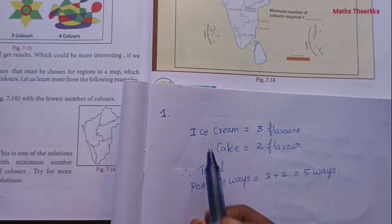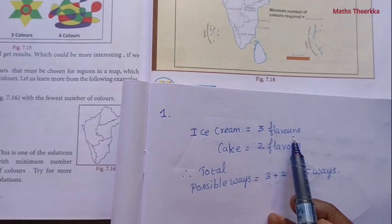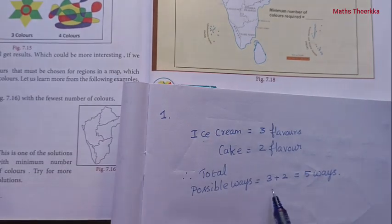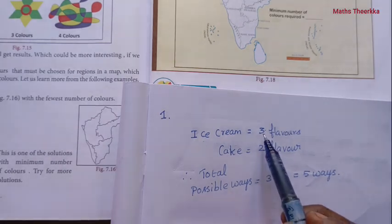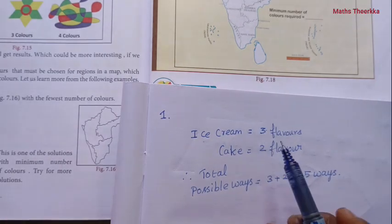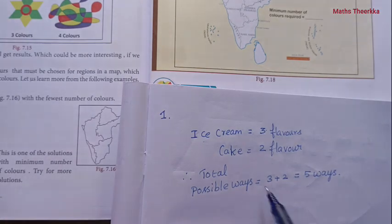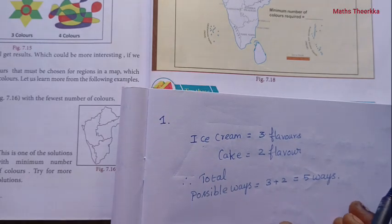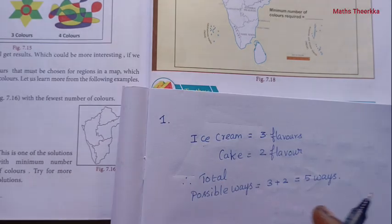Very easy. For this question, ice cream has 3 flavours, cake has 2 flavours. To find the total possible ways, since we choose one ice cream OR one cake, we add: 3 plus 2 equals 5 ways. This is the answer for the first question.